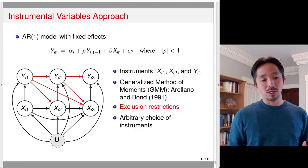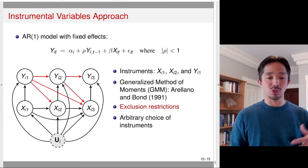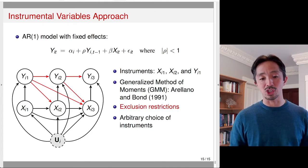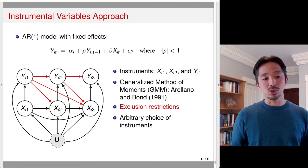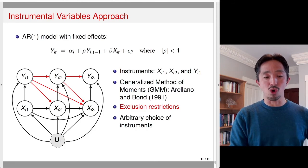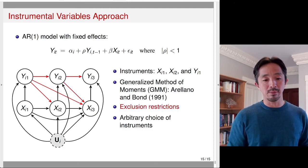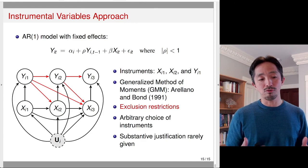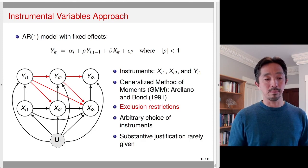The problem with this approach, in my view, is that the choice of instrument is often arbitrary — it's unclear substantively whether two lags are enough or three lags are enough, and it's really hard to make that judgment in many applications. Unless you have a strong justification for why going back two time periods means that variable won't directly affect the current outcome, this approach may not be credible from a causal inference standpoint. The application of these approaches often lacks substantive justification for why a certain number of lags is chosen to estimate this dynamic relationship.